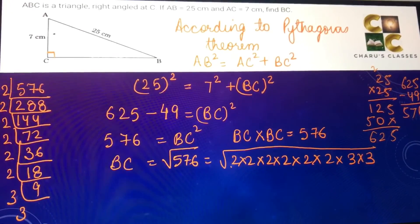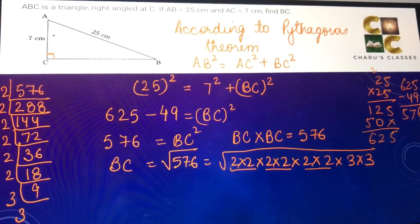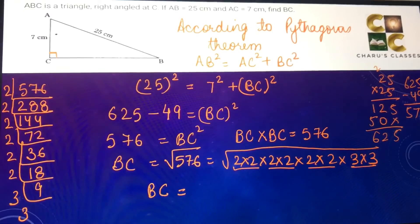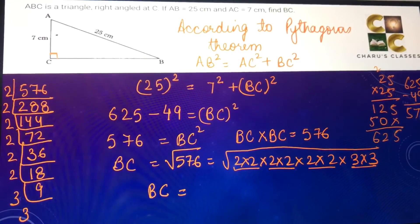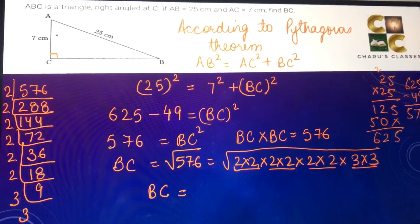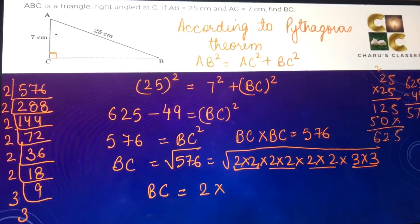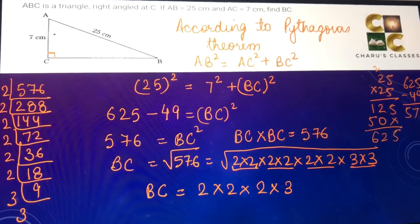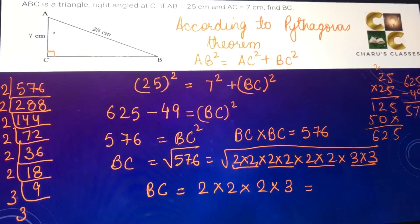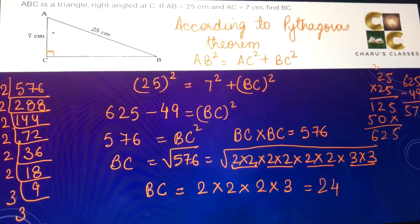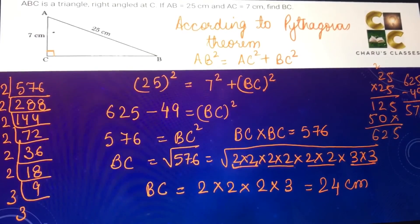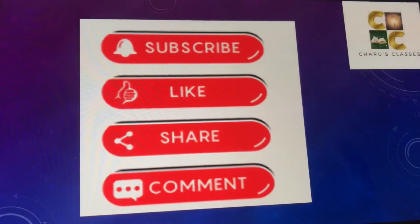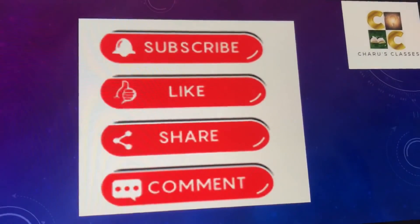Inside the square root we make pairs. When the square root sign is removed, we take only one number out from each pair. So we get 2 × 2 × 2 × 3, which gives us 8 × 3 = 24. Therefore BC is equal to 24 centimeter. If you like the video please like, share and subscribe. Thank you.